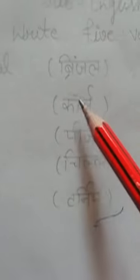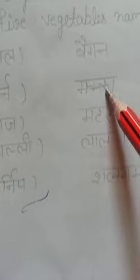Number two, C-O-R-N, corn. Corn means makkah.